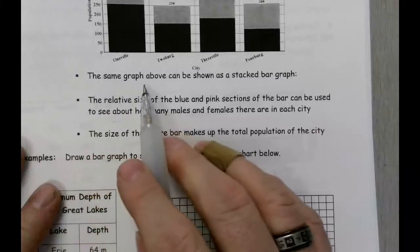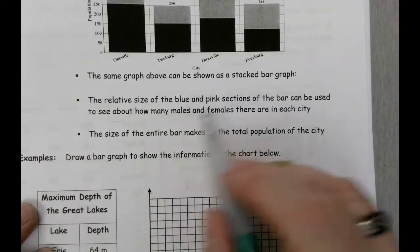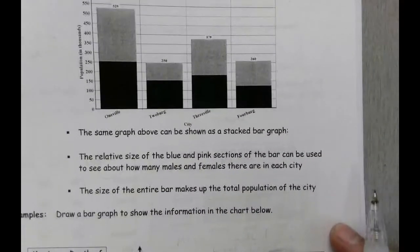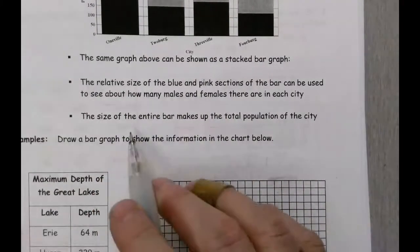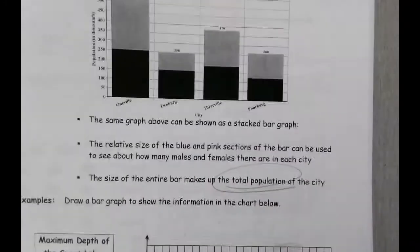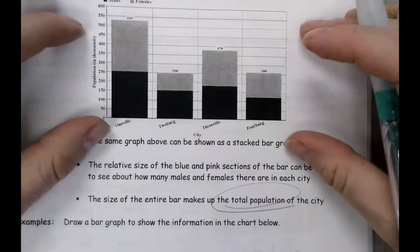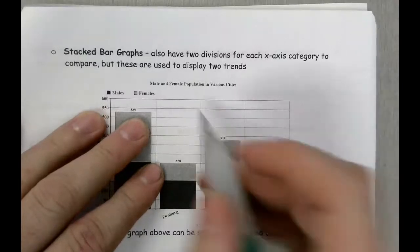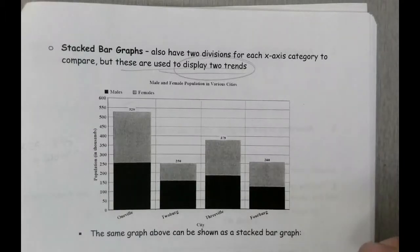It really depends on what you're trying to accomplish. The relative size of the sections can be used to see how many males and females there are in each city, and the size of the entire bar makes up the total population. These graphs are also used to display trends in the data — really useful for that sort of communication.